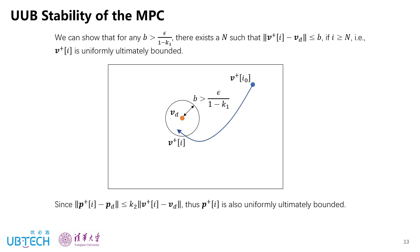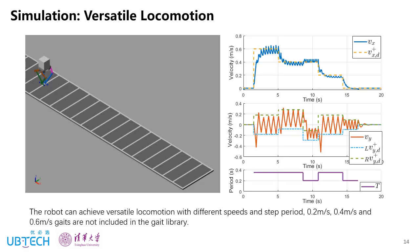Next, I will show some simulation and experimental results. First is versatile locomotion with different speeds and step period. Note that the 0.2, 0.4, 0.6 meter per second gates are not included in this gate library.